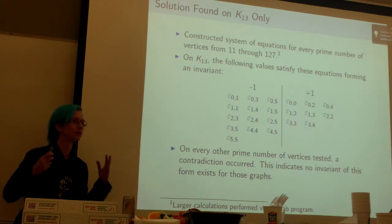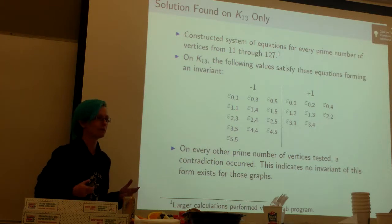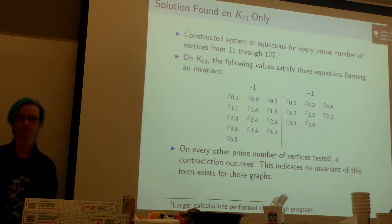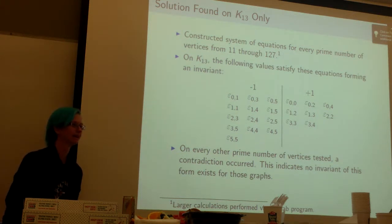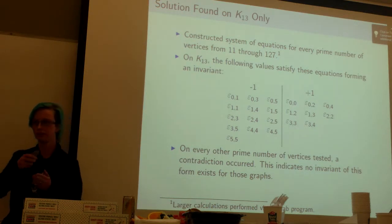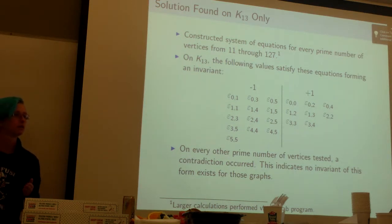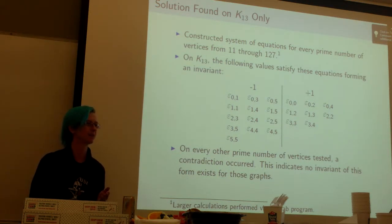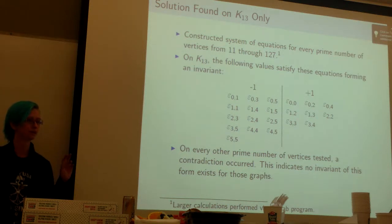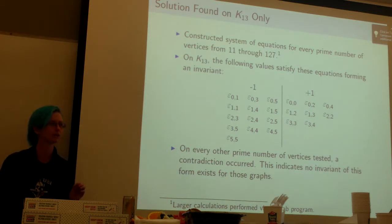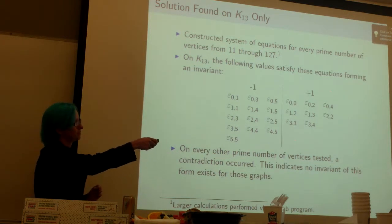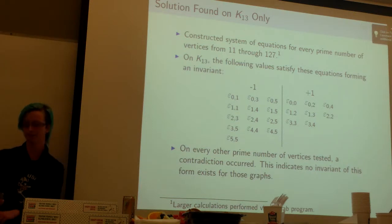At first I thought every prime number is going to work. Surely, I mean don't primes always work? Not this time. K11 found contradiction. I thought oh surely that'll be the only one that doesn't work. K13 it worked, okay good. K17, K19, K23 - contradictions all the way as far as I've gone so far. The only one other than the original ones with five or seven vertices that works is 13 vertices. Here are the epsilon values that I ended up with for 13 vertices.